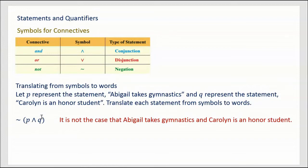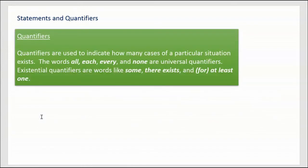Now, quantifiers. Quantifiers are used to indicate how many cases of a particular situation exist. The words 'all,' 'each,' 'every,' and 'none' are called universal quantifiers — they cover everything, either everything is or nothing is. On the other hand, existential quantifiers like 'some' and 'there exists' indicate at least one — you're just saying at least one of these particular things exists.